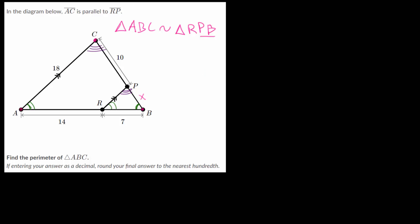Once we've proven that the two triangles are similar, we can set up an equation that shows the proportionality between the side lengths. We know that since the two triangles are similar, if we start at the smaller triangle and multiply all of the side lengths by the same number, we will get a scaled version — namely, this bigger triangle. We can figure out what that proportionality constant is by going from the smaller triangle to the bigger triangle.